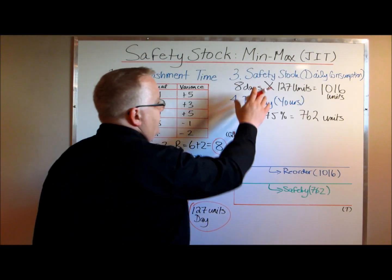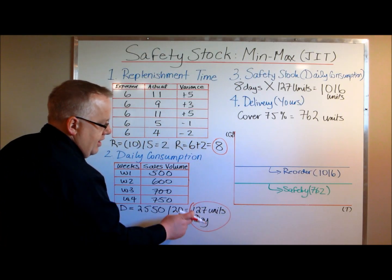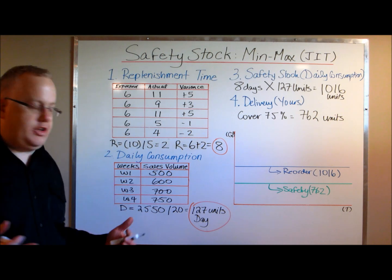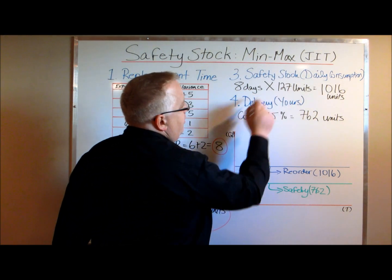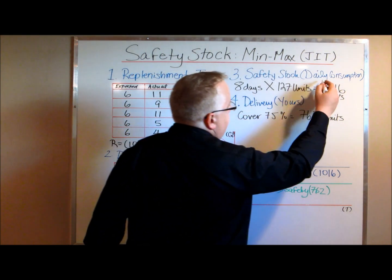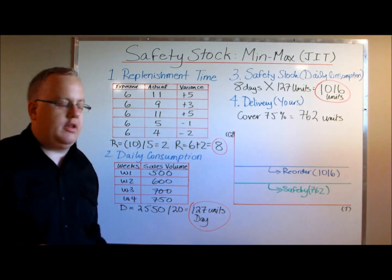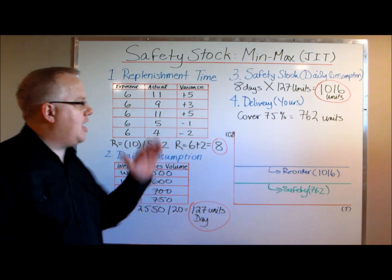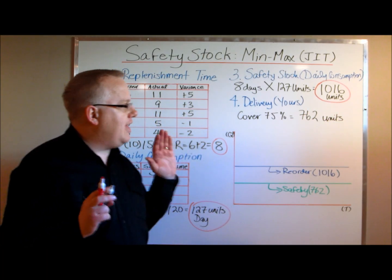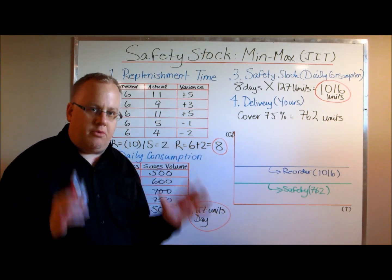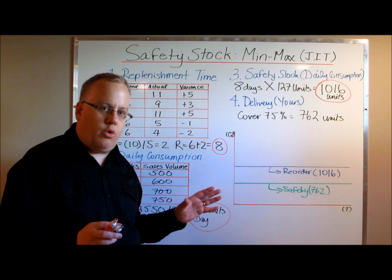Now we move to safety stock. We need to cover eight days at 127 units per day. Very simply, eight days times 127 units gives us a safety stock of 1,016 units. A lot of companies just stop right here and say that's their safety stock and reorder point — they don't want inventory to go below that level, and if it does, they order right away.